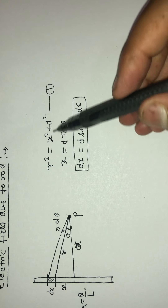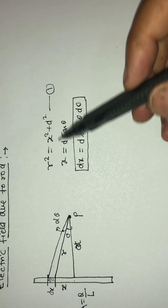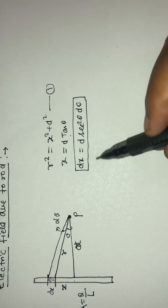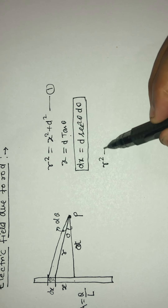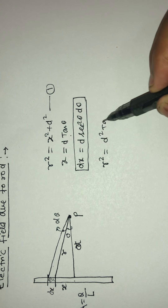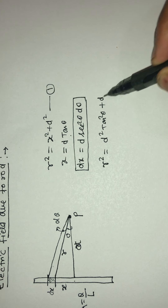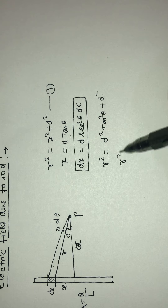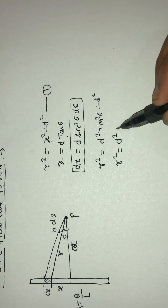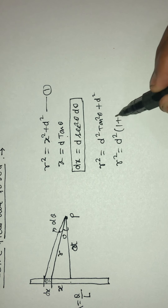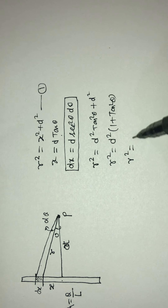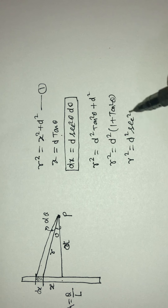So if I want to find out r squared in terms of d, in place of x I will write d·tan(theta). So r squared is equal to d²·tan²(theta) plus d squared, which gives r squared is equal to d²·sec²(theta).